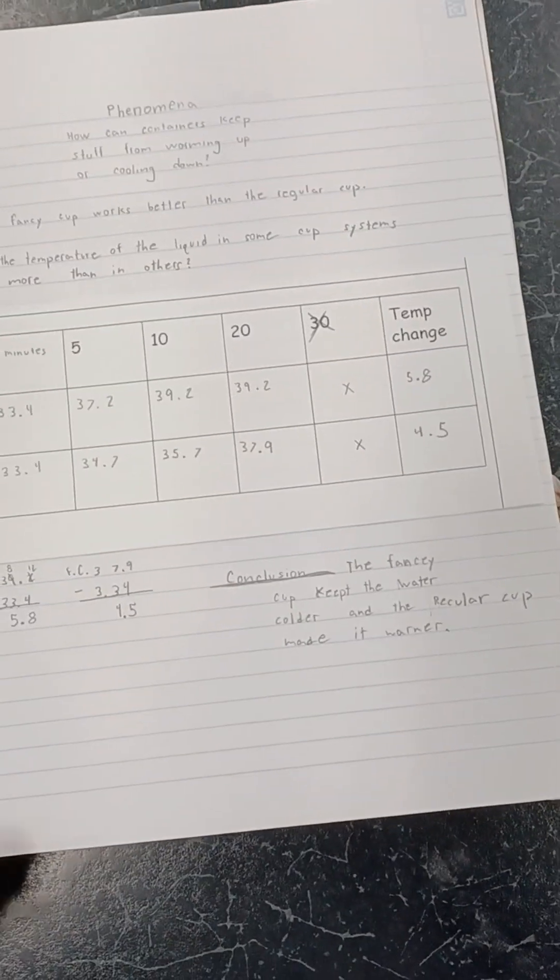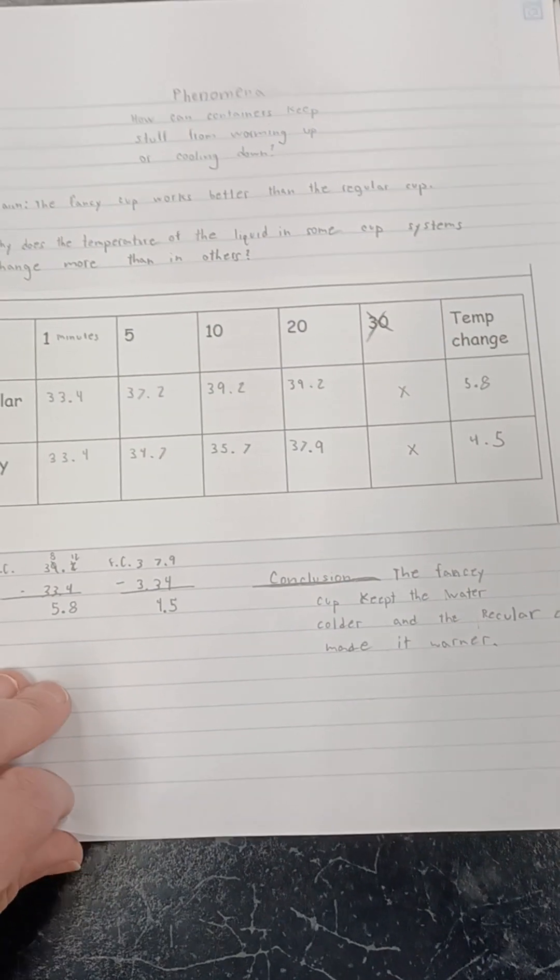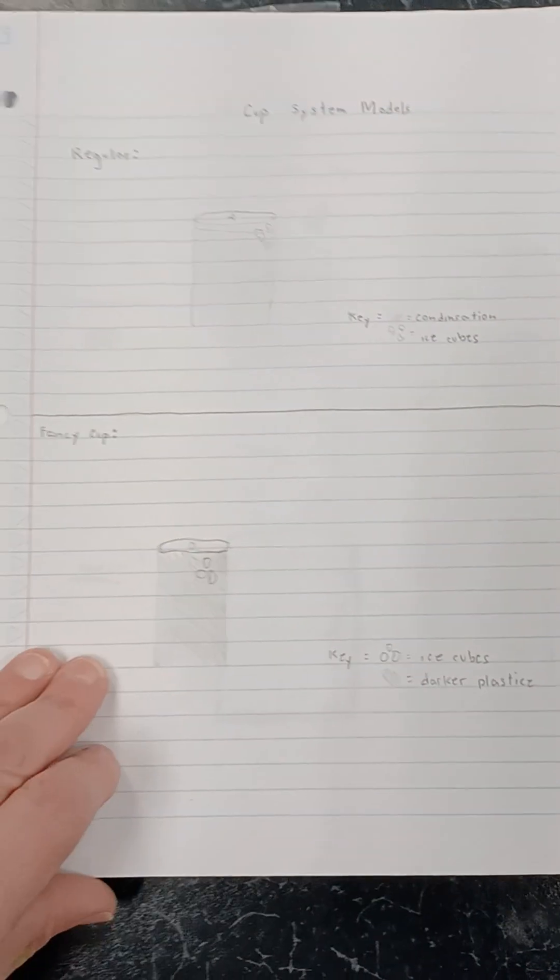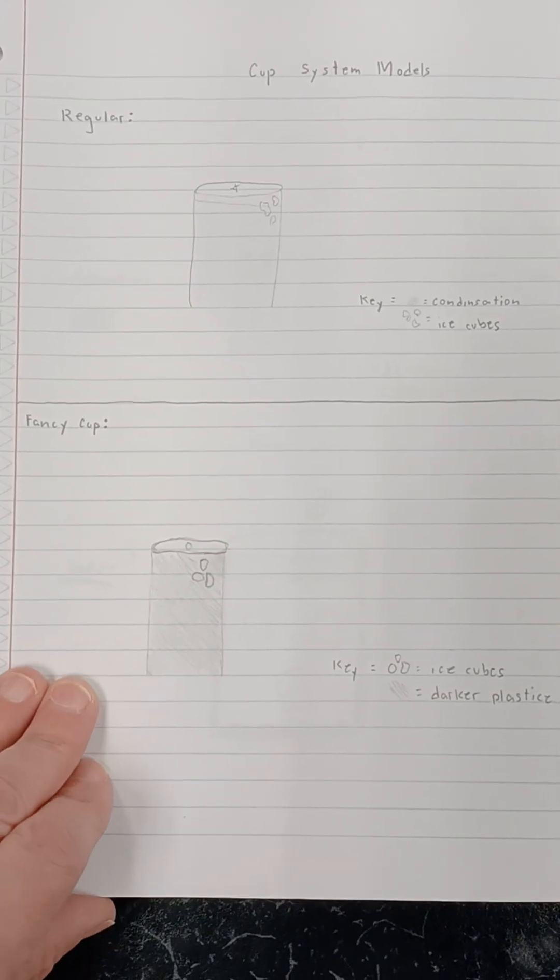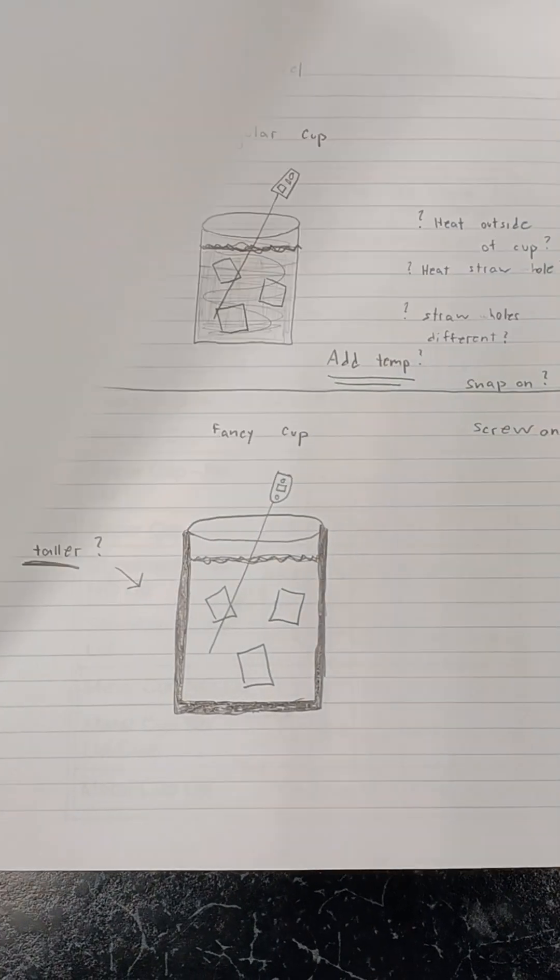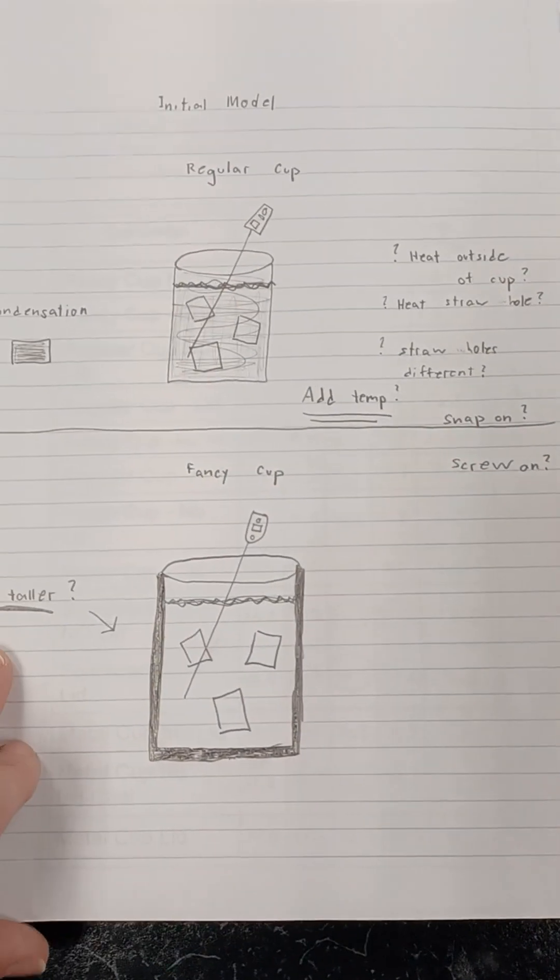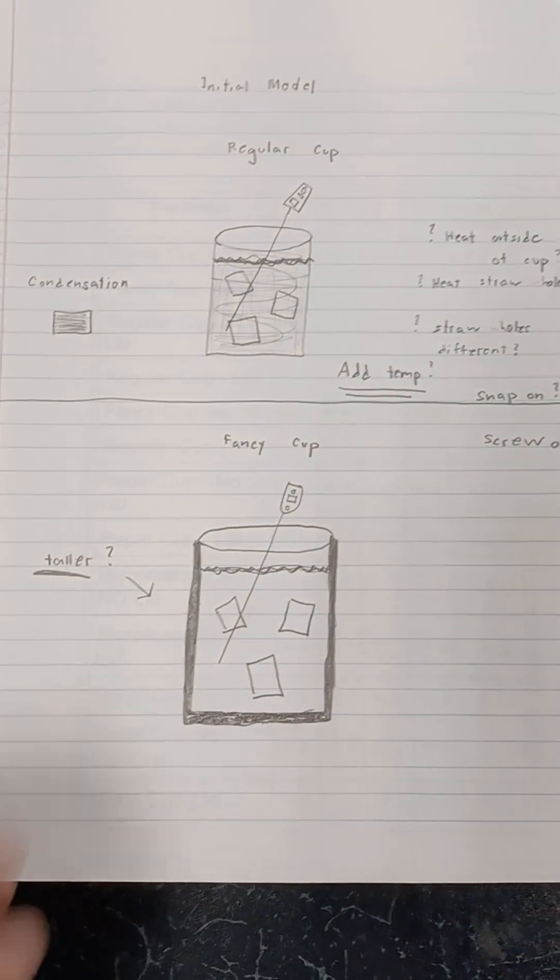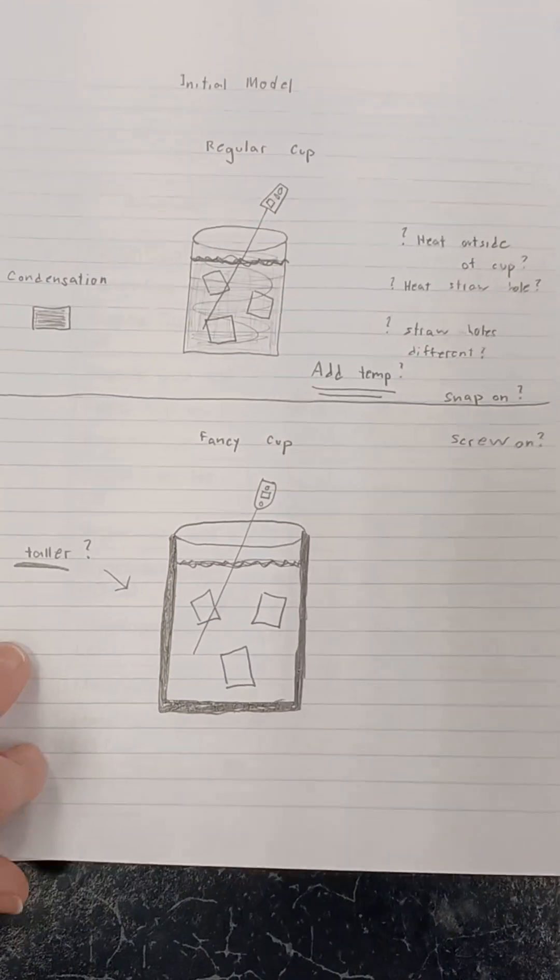Our first experiment under lesson one, this is the chart that I had them fill out. Then we had to come up with our initial class model, and this is our class's initial class model that we discussed together and drew in our geo journal. This was the student's example model, and then we came up with a class model together.